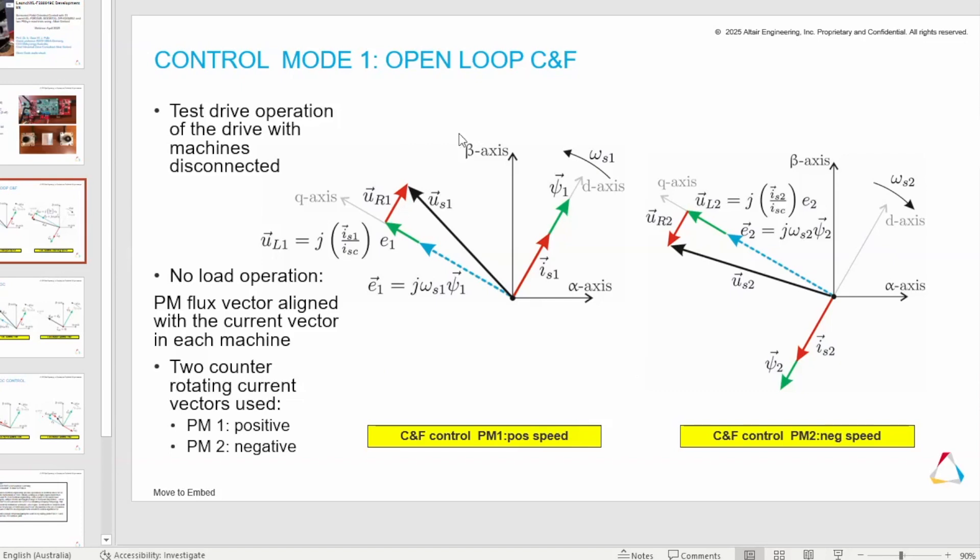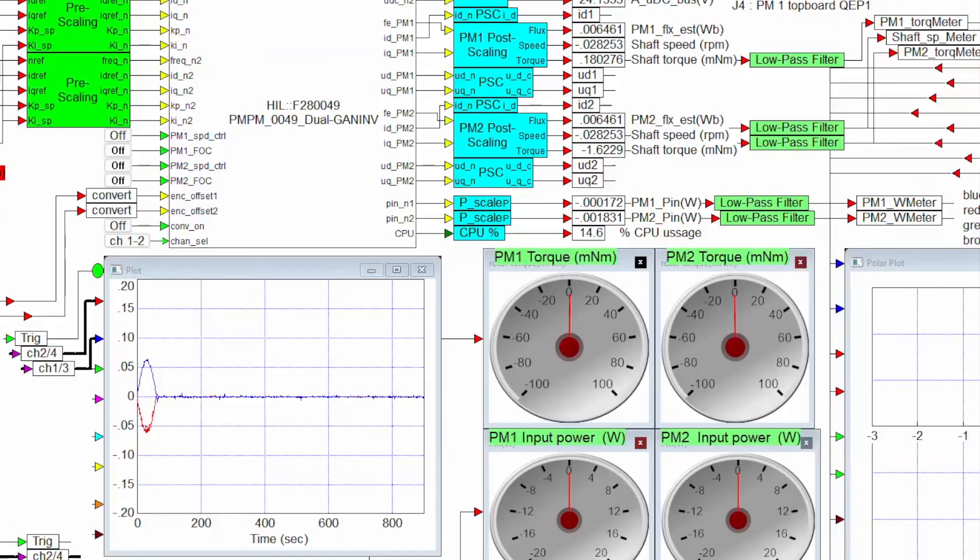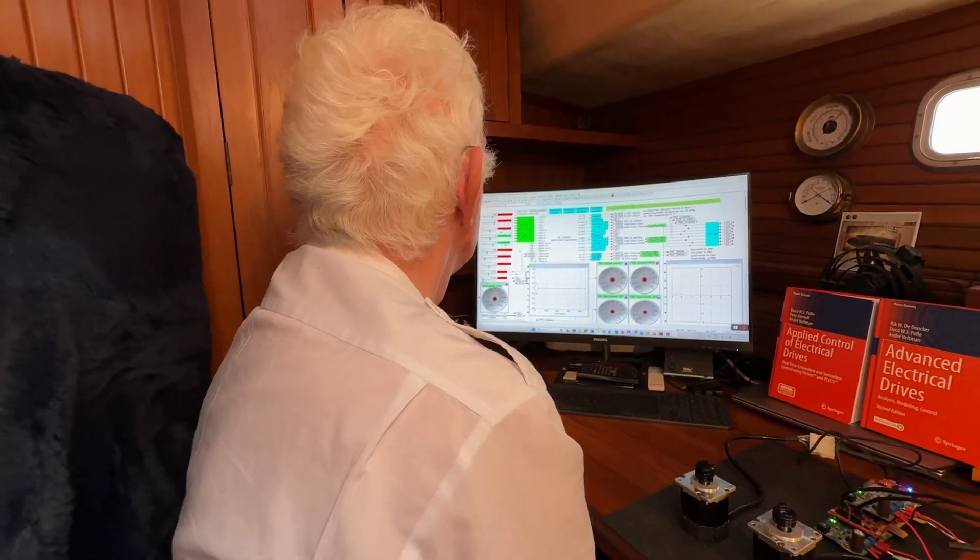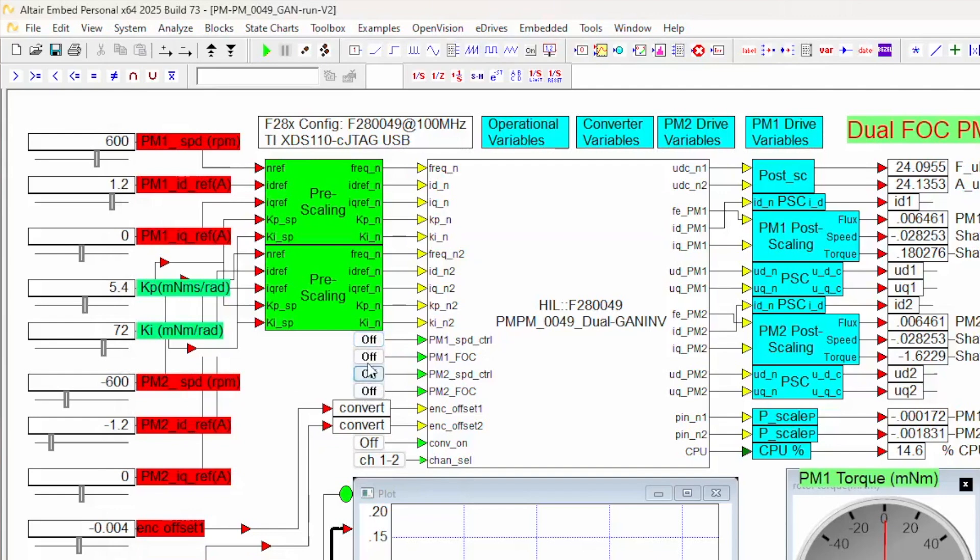That is the first step, open loop, we're going to see. So we're going to see the voltage vector, current vector, for both machines in this particular plot. To start this up, we need to set up the machine with PM off, FOC off. We're going to run that machine now.